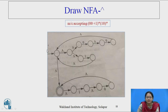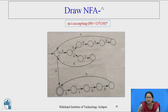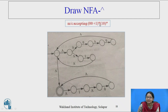Now (00+1)*10*: we connect the two separate machines — machine (00+1)* concatenated with machine 10*. The final state of the first machine is connected to the initial state of the second machine with a null transition, and only the accepting state of the second machine remains as the accepting state. In the case of Kleene star, the initial and accepting states are the same, so from that initial state we connect to the initial state of the next machine.